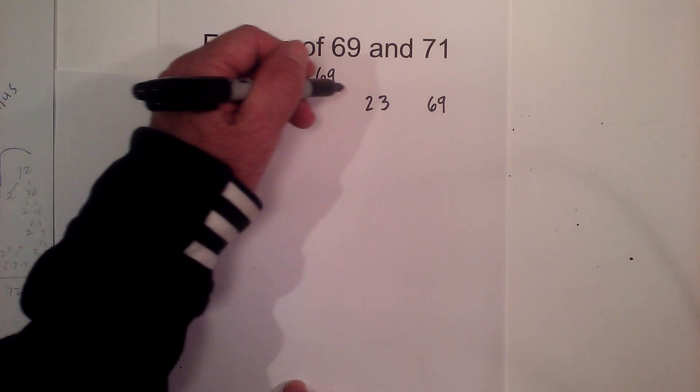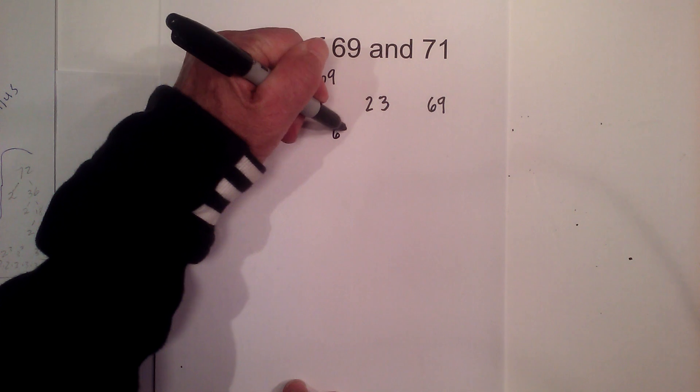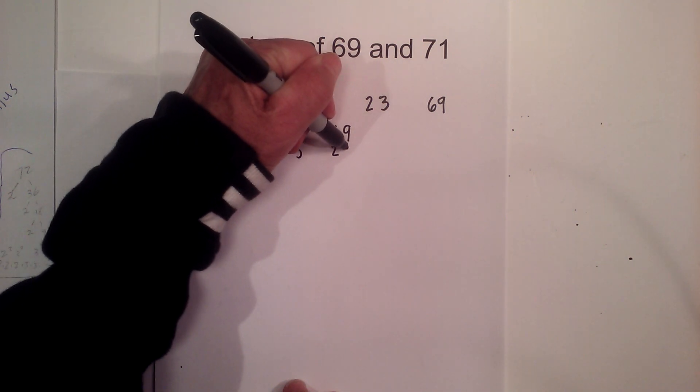So the factors of 69 are 1, 3, 23, 69, and the pairs are 1 and 69, and 3 and 23.